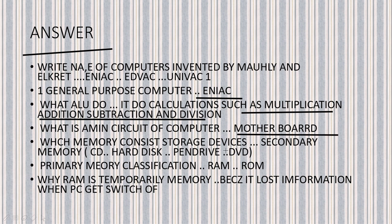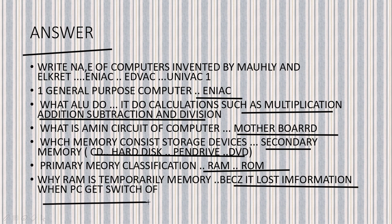Which memory consists of storage devices? Secondary memory. Some storage devices are CD, hard disk, pen drive, DVD, etc. Primary memory classifications are RAM and ROM — Random Access Memory and Read Only Memory. Why is RAM temporary memory? Because it loses information when the PC gets switched off.